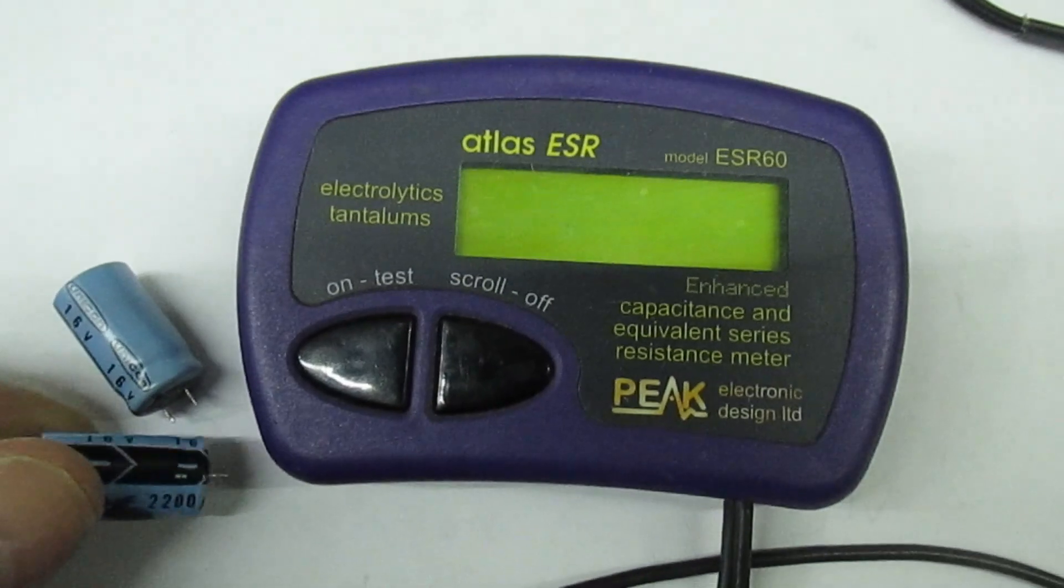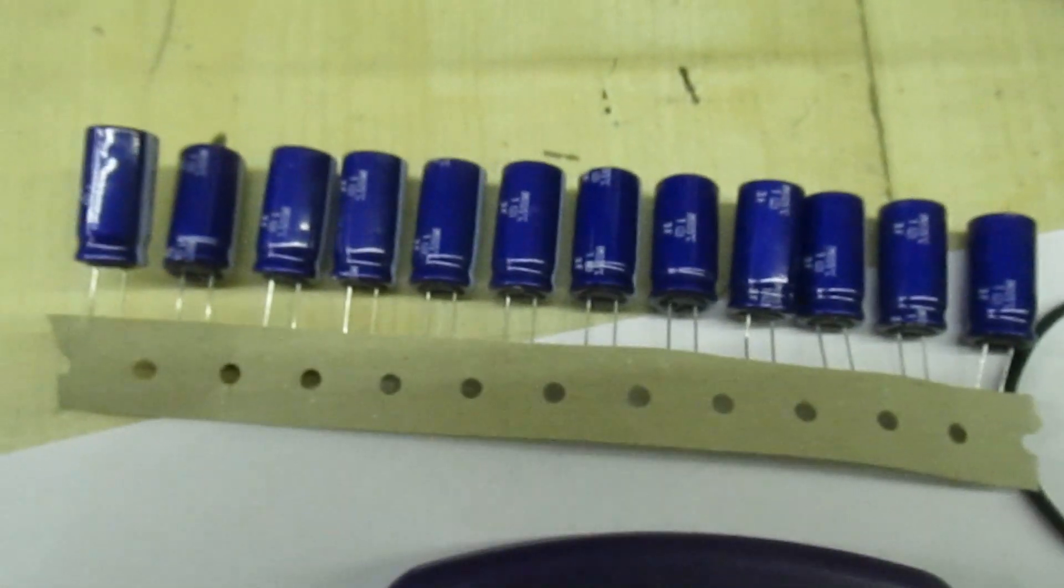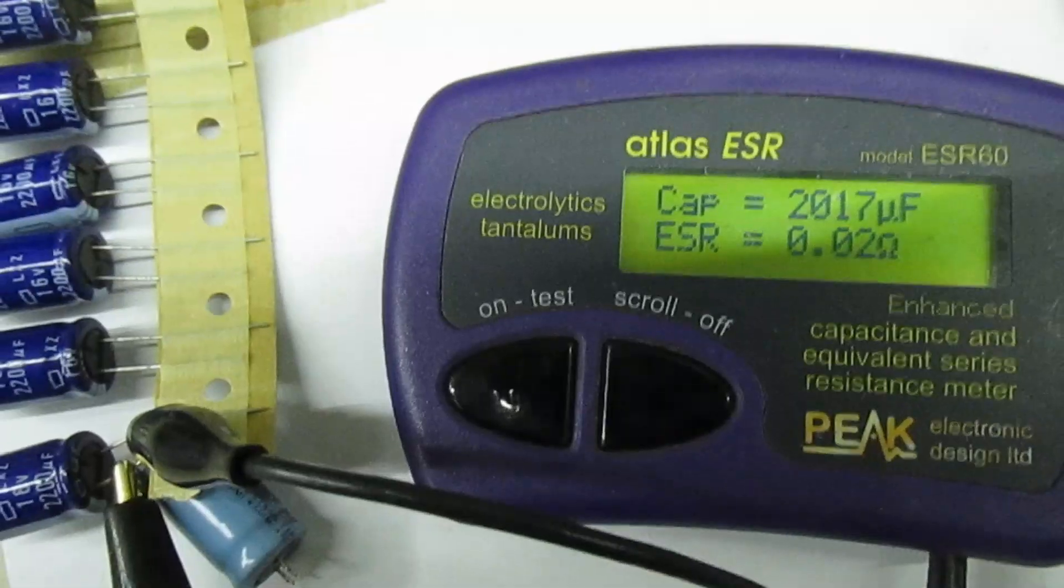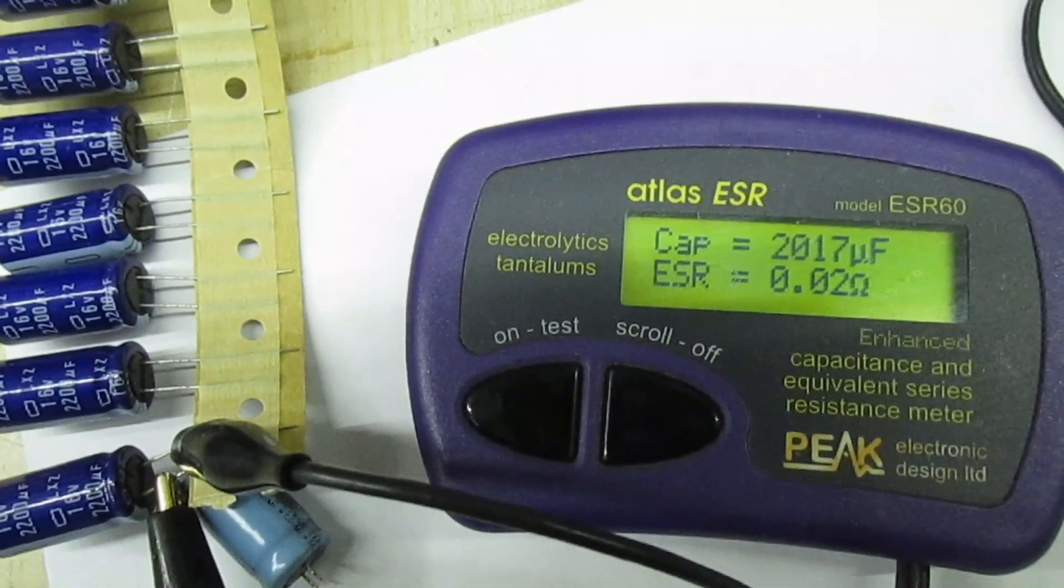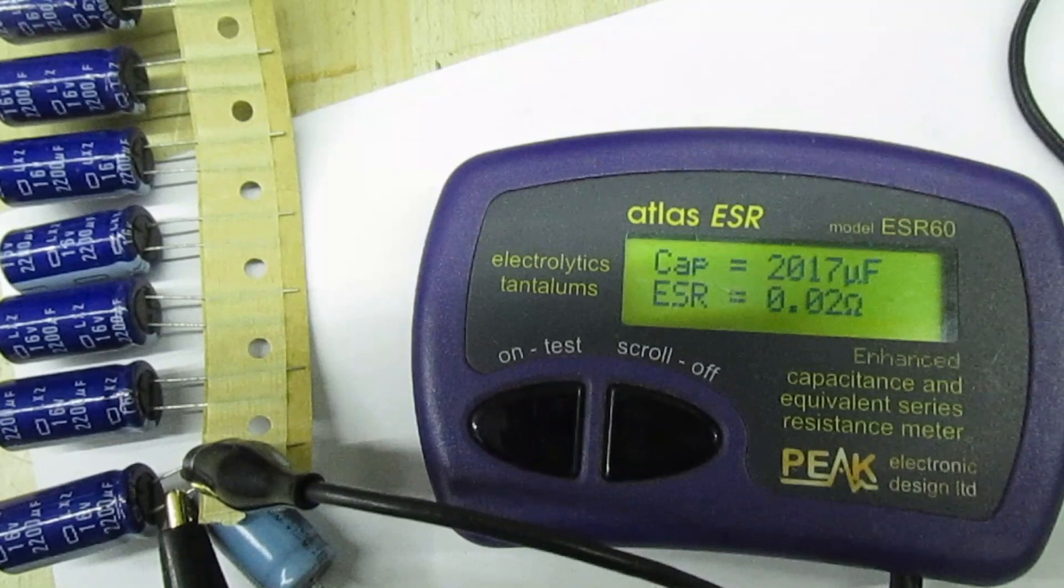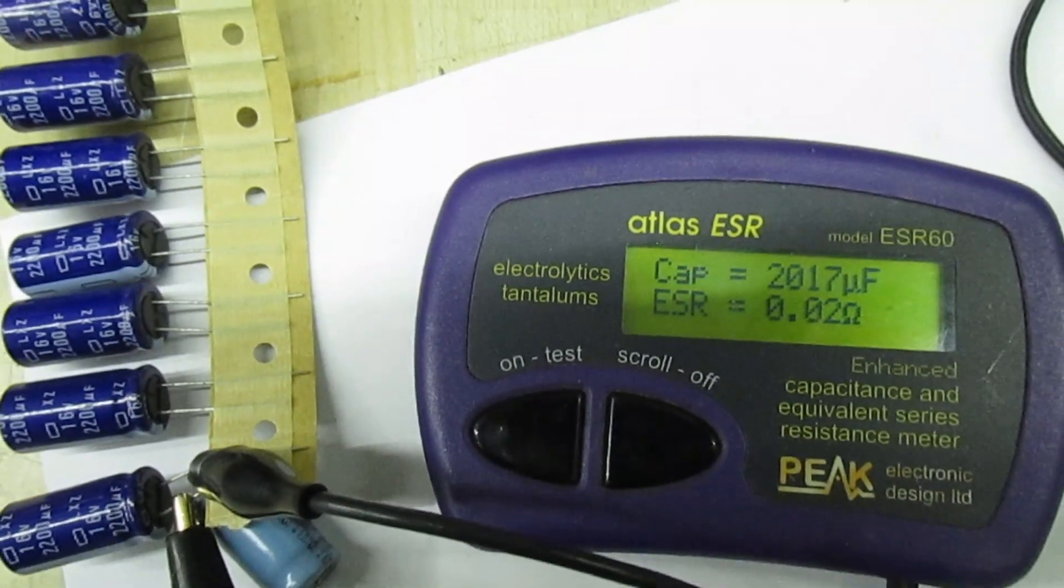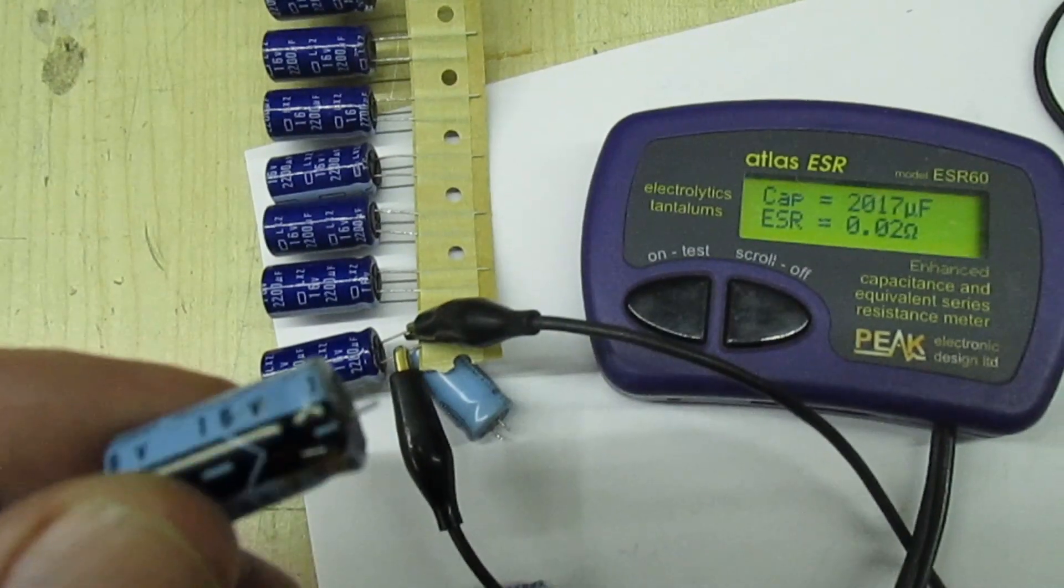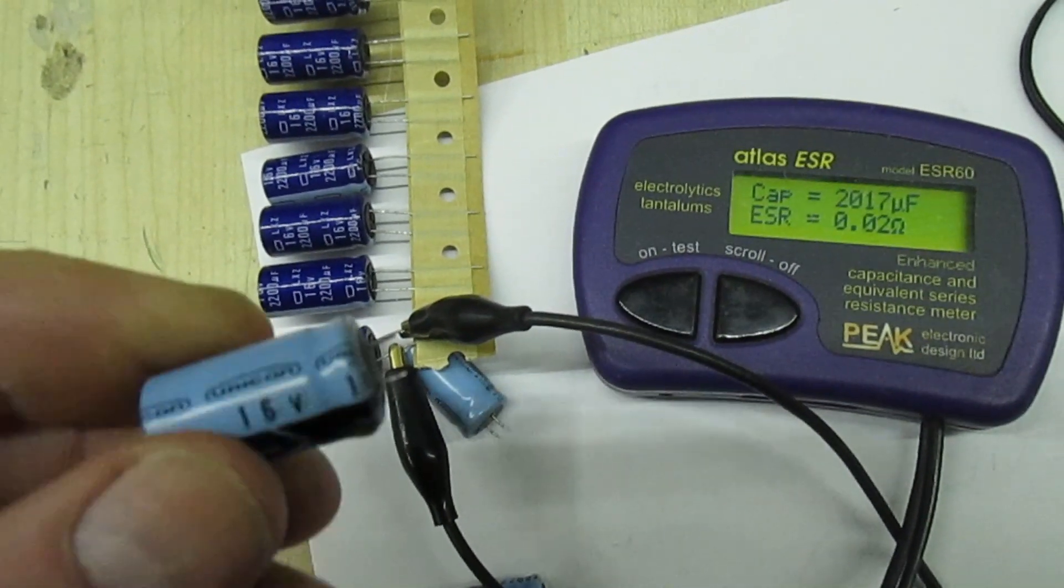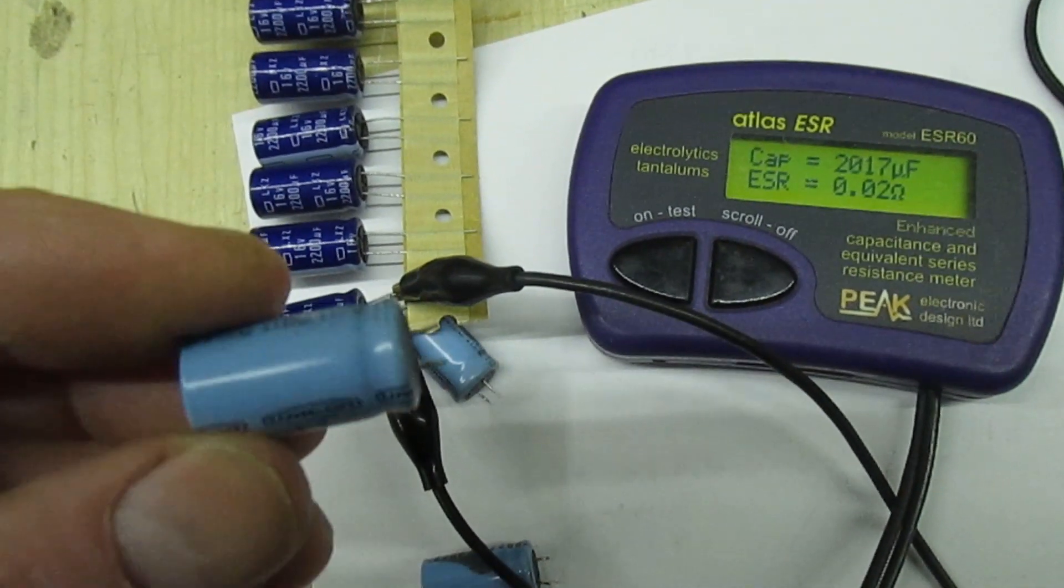So if you look at the ESR, 0.18, we'll compare that with a brand new one. And that's the effective series resistance of a brand new one: 0.02 ohms. But if you look at the top, it's actually reading the capacitance value, whereas these three don't - they're just saying 'in circuit'. So obviously there's something going on with these caps.